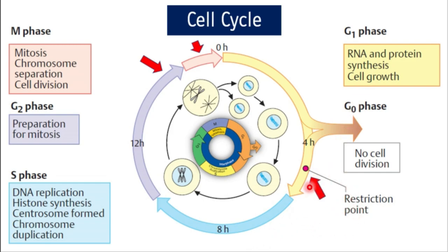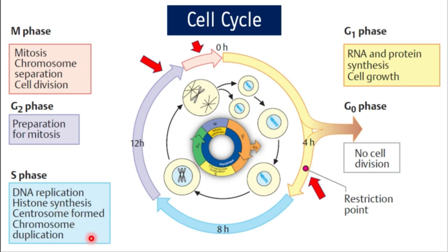The points highlighted with the red arrow are the restriction points. G0 is the stationary phase when there is no cell growth happening. The chromosomes replicate to form sister chromatids during the S phase. These sister chromatids segregate to daughter cells during the mitotic phase — chromosomes replicate in S phase and then segregate during mitosis.